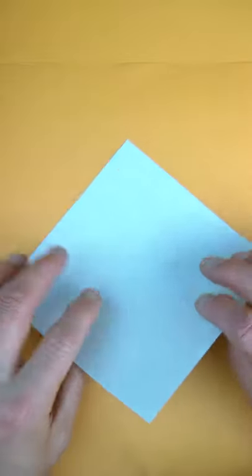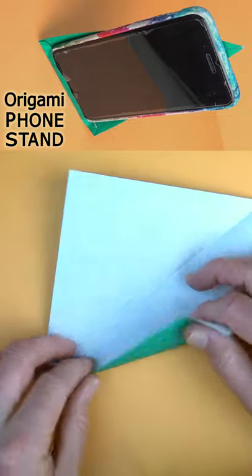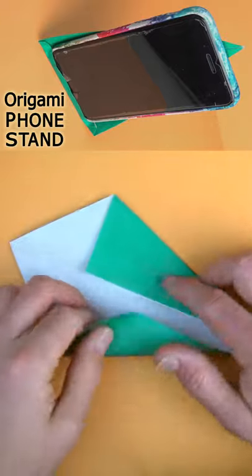So for the portrait phone stand, begin white side up and fold diagonally in half, unfold and fold to the crease, and repeat.